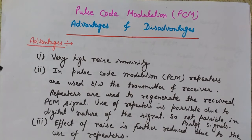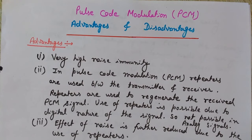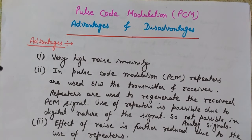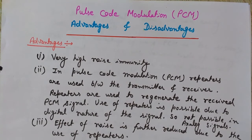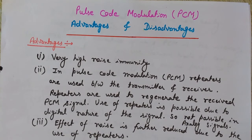Now let's discuss the advantages of PCM. The first advantage is very high noise immunity. PCM signals are digital in nature, which makes them less susceptible to interference and noise compared to analog signals. The digital waveform does not have to be reproduced exactly as transmitted — if it is close enough to the expected value of binary one, it is reliably reproduced as an actual binary one. Therefore, digital signals are more immune to noise and can be reproduced without much difficulty.